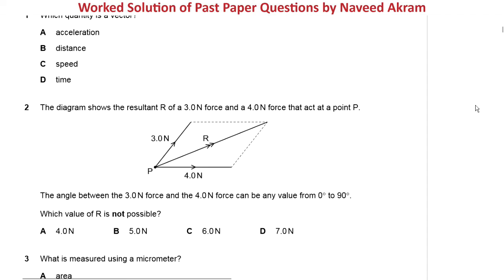The diagram shows the resultant R of a 3 Newton force and a 4 Newton force that acts at point P. Here we have a point P and we have two forces, one is of 4 Newton and the second one is of 3 Newton which acts at this point P. And this is the resultant R of these two forces.